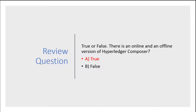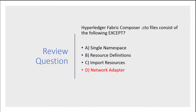Let's go over some exam readiness questions. There are two versions of Hyperledger Composer, online and offline — true or false? That's true. Next: Hyperledger Fabric Composer .CTO files consist of the following except what? Remember that CTO files contain the namespace, resource definitions, and you can also import resources from other namespaces. Therefore, the only one that doesn't make sense is the network adapter. Remember, the .CTO file along with transactions, access control, and query gets put together in what's called the Business Network Archive file.